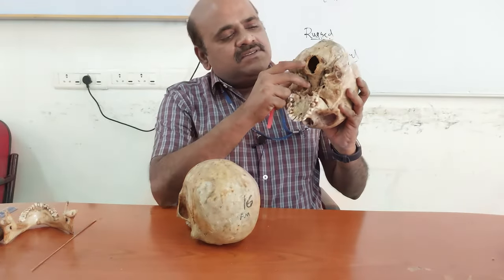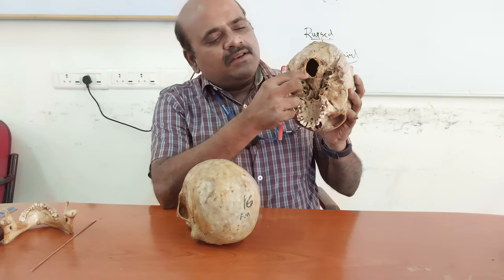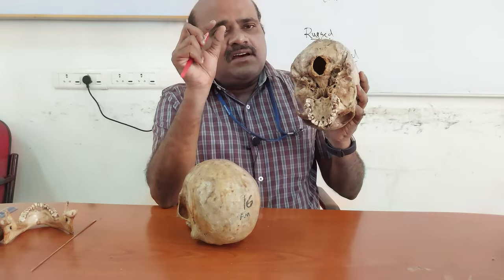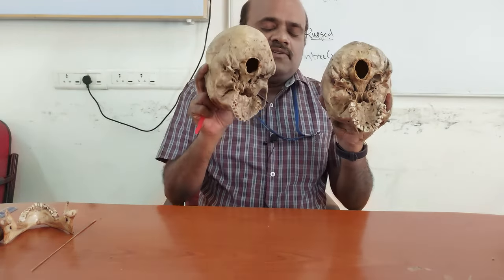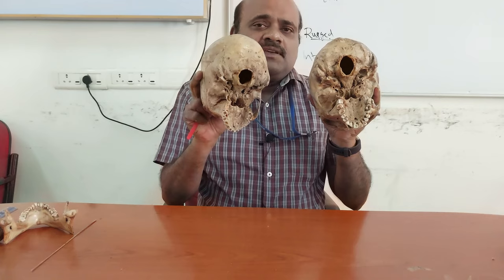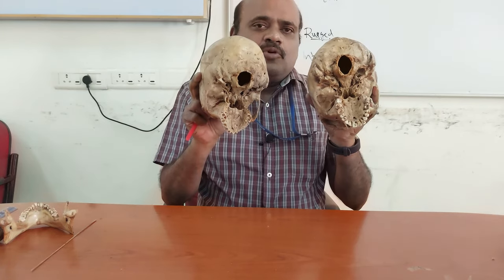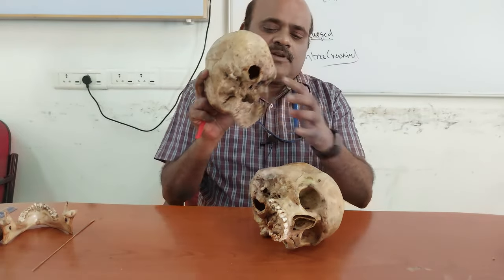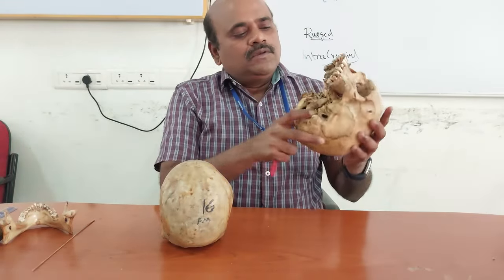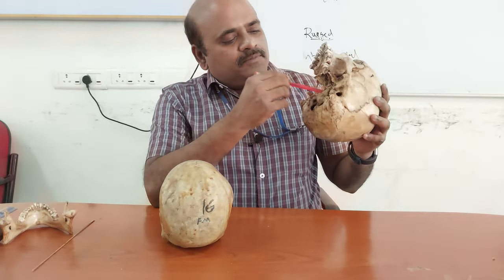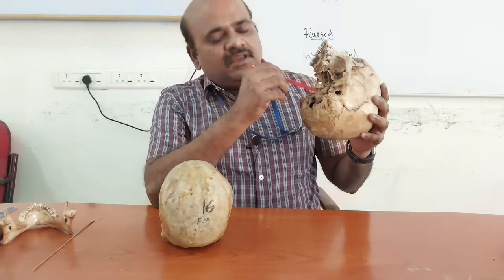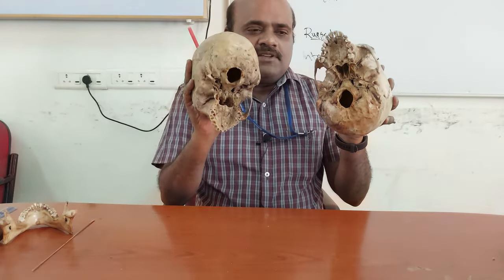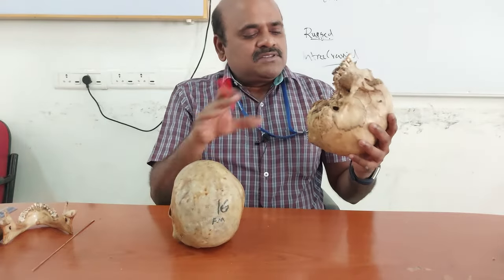Looking at the condylar facet specifically, in the male it is longer and slender — more elongated and lean — whereas in the female the condylar facet is shorter and broader, with more width compared to the male skull. The basal foramina are relatively bigger in the male skull, whereas they are smaller in the female skull, though that is not very important.